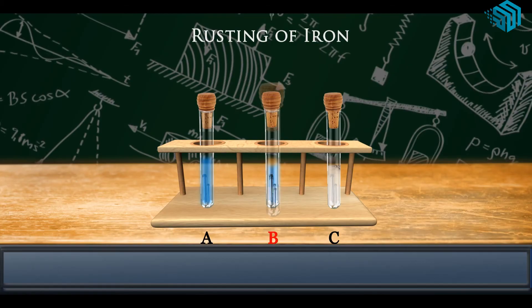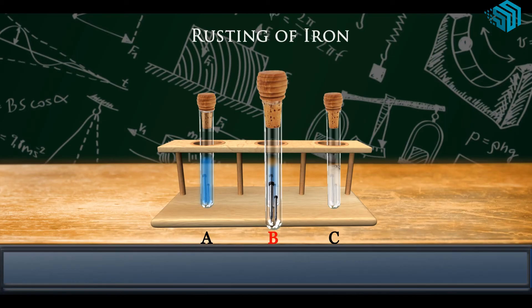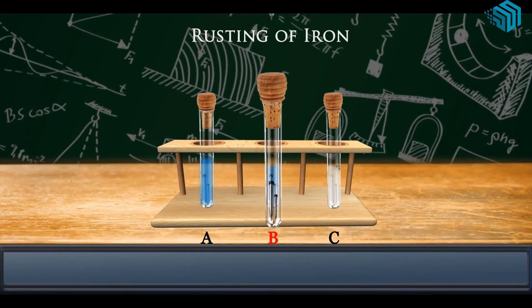Nails in test tube B do not get rusted because air was prevented from reacting with iron.